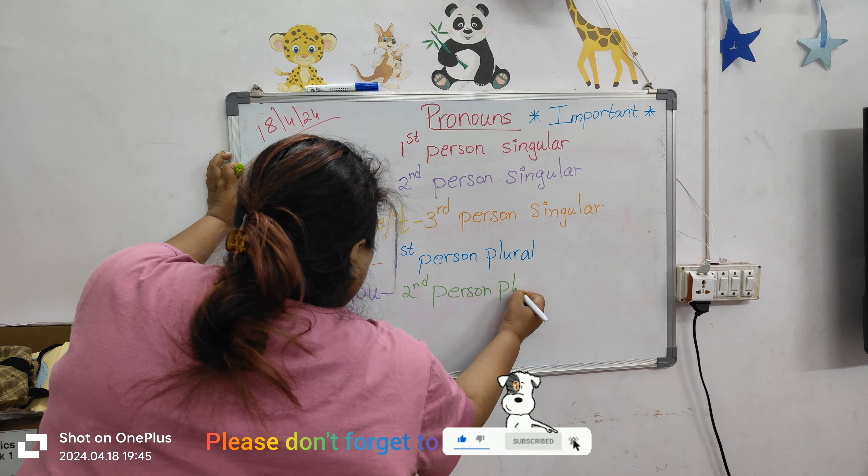Now 'they'. Suppose Pratham is talking to me about his neighbours: 'Ma'am, they are very cunning. They keep the house dirty, they create noise and nuisance.' So we are talking about someone else who is not here — they are third person. So 'they' is third person plural.